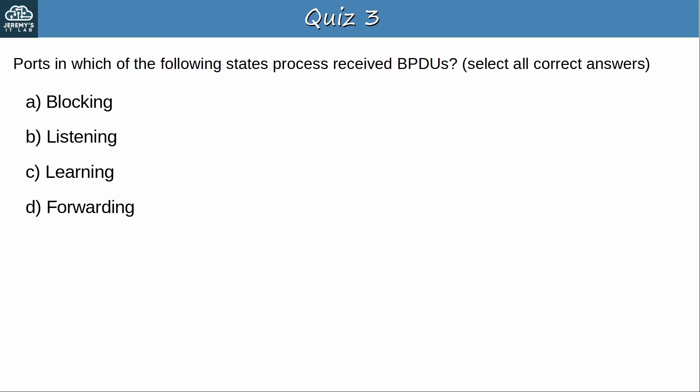Okay, let's go to question 3. Ports in which of the following states process received BPDUs? Select all correct answers. Pause the video now to think about the answers. Okay, the answers are all of them. A switch will process BPDUs received on any port, even in the blocking state. Although, as the example I showed earlier indicates, if a blocking port receives an inferior BPDU, it will ignore it until the previous BPDU ages out, but it still has to process the BPDU to identify that it's inferior. Okay, that's all for the quiz and this video, I hope it was helpful, thanks for watching.